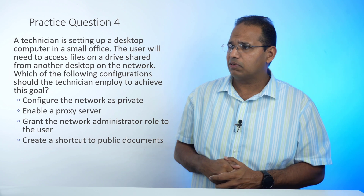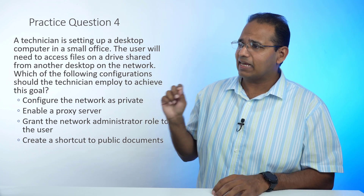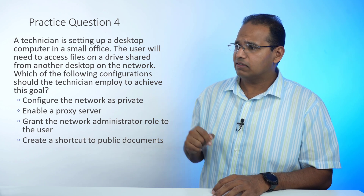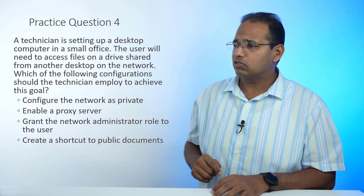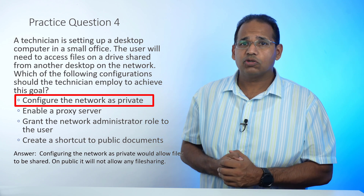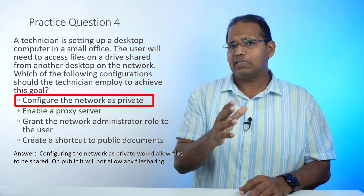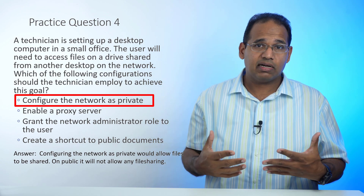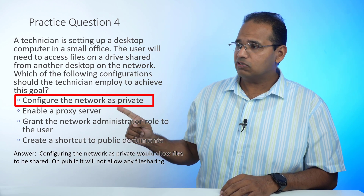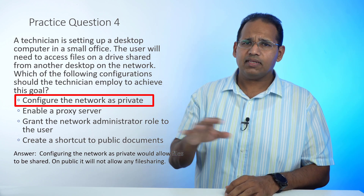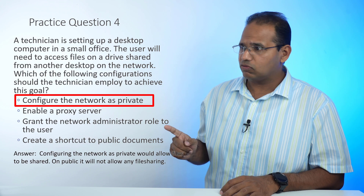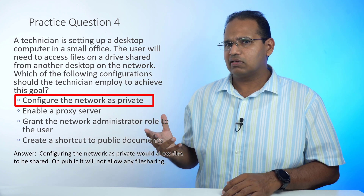Practice question number four: A technician is setting up a desktop computer in a small office. The user will need to access files on a drive shared from another computer. Which configuration should the technician deploy? The best answer is to configure the network as private. When you join a Windows computer to a network, it asks if it's public or private — on a public network you can't share documents, but once configured as private, you can enable file sharing. A proxy server controls internet access, we never grant users administrator roles as that's bad security, and there's nothing in the question indicating public documents.